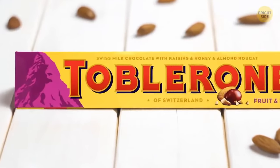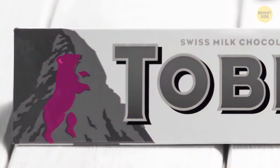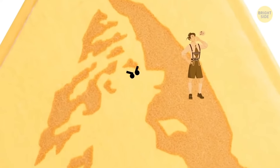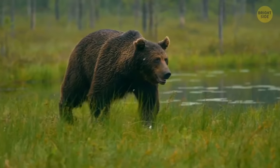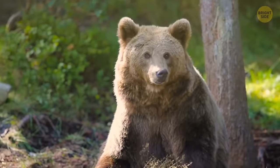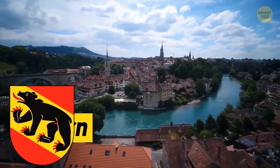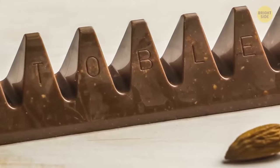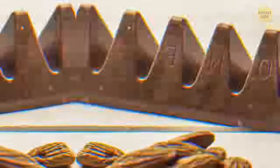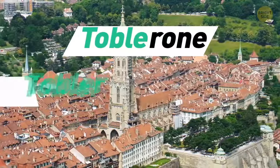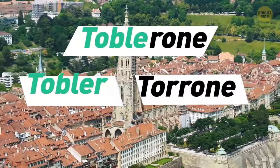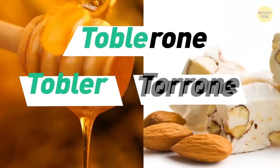Hidden within the Toblerone logo of the mountain is the image of a bear standing on its hind legs about to eat that yodeler over there. No, not really. This is because bears are a big part of Bern, one of the biggest cities in Switzerland where the founder created the triangle chocolate treat. Toblerone is also a play on the founder's family name, Tobler, and the Italian word Torone for honey and almond nougat.